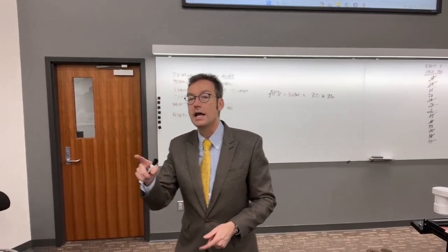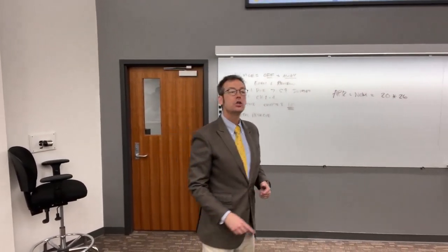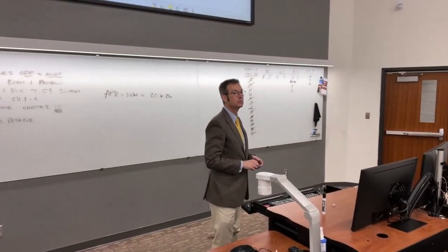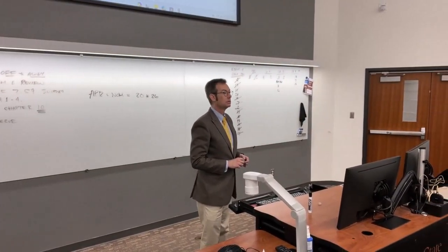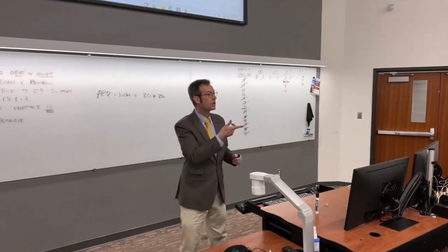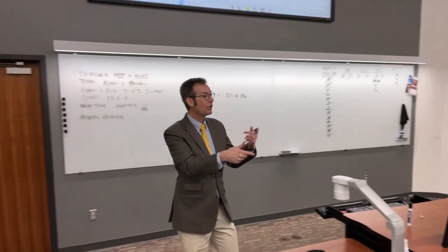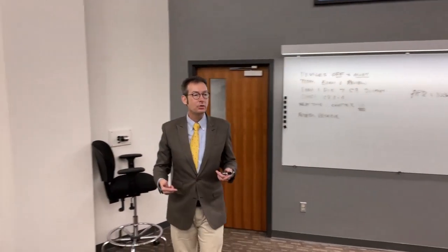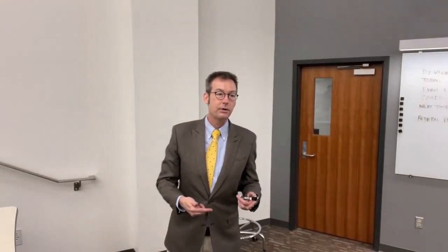Enter nominal = 520, enter. Compoundings per year = 26, enter. Arrow up to EFF, compute. That gives 11,347.55%. I thought about opening a payday loan business but my mom told me it was immoral, so I became a professor instead.